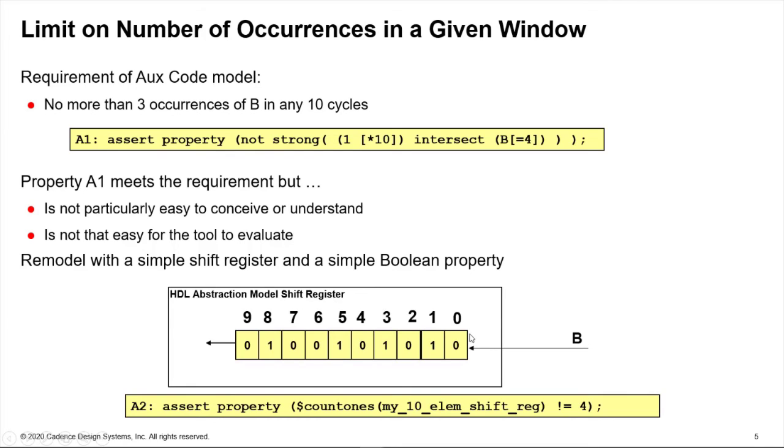We've got a shift register with 10 elements because we've got a 10 cycle window. We shift B in from the right hand side and we clock it down every clock until it falls out at the end.